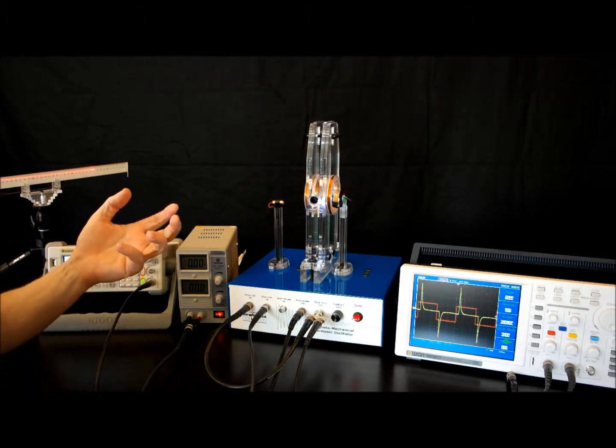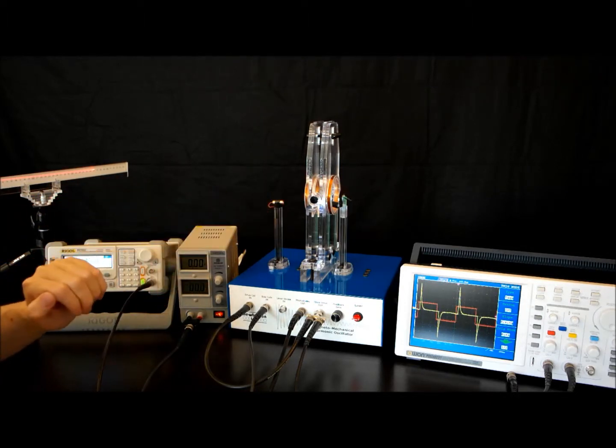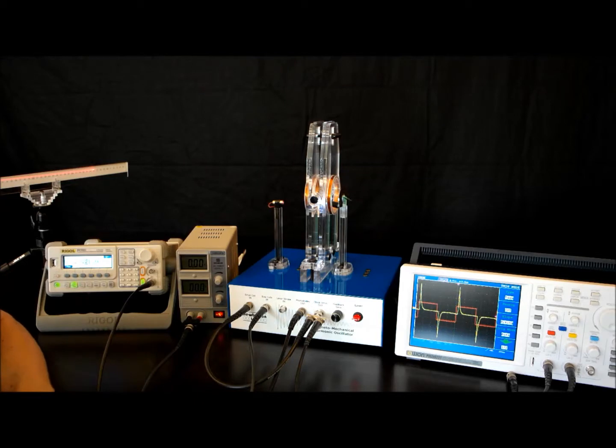The spring constant I'm adding is mu times B. I know B because it's related to the current. Therefore I can calculate mu, the magnetic moment of that magnet.